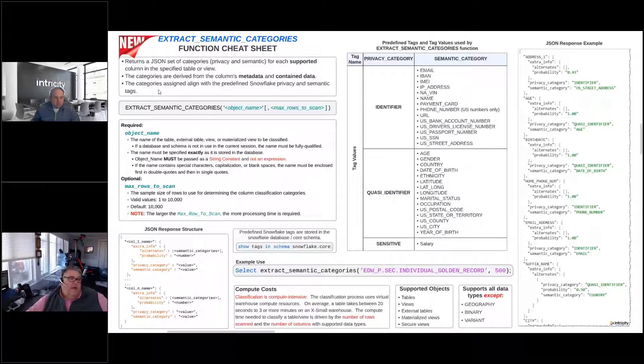And then the categories that are assigned align with the predefined Snowflake privacy and semantic tags. If we come over here in the middle here, you'll notice that there are actually two tags that Snowflake has defined. These are predefined tags: one is called privacy_category and one is called semantic_category. Basically these are two levels of classification that the extract_semantic_categories is going to use.